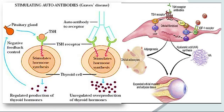Binding of autoantibodies to TSH receptors induces unregulated activation of the thyroid and overproduction of thyroid hormones. The increased amount of thyroid hormones stimulates the orbital fibroblasts. The result is inflammation and a buildup of tissue and fat behind the eye socket, causing the eyeballs to bulge out.